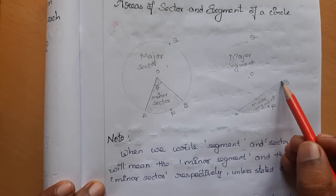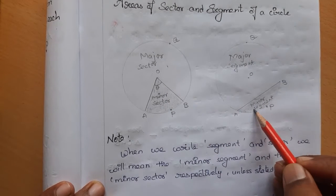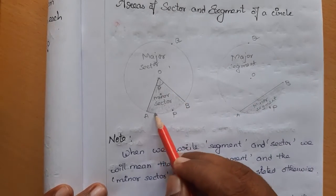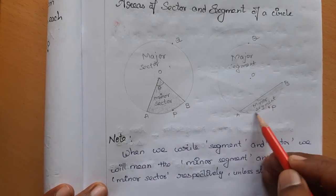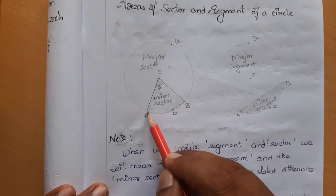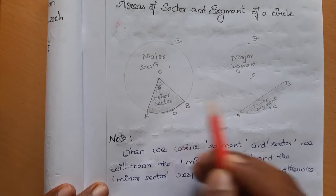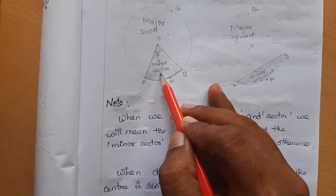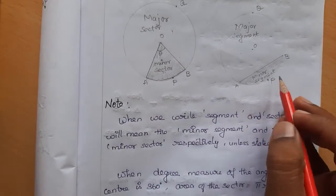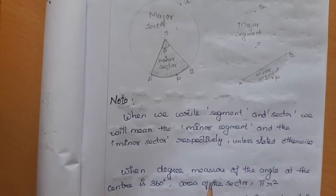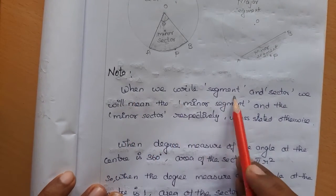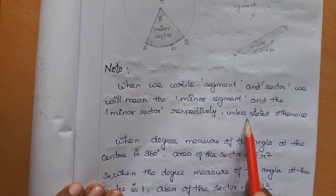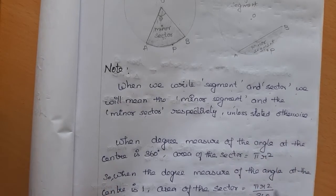The bigger one is the major sector. A segment is covered by a chord — the small one is the minor segment and the bigger one is the major segment. It is covered by two radii and an arc of the circle, while a segment is covered by a chord and an arc. When we simply say 'sector' it means the minor sector, and when we say 'segment' it means the minor segment.